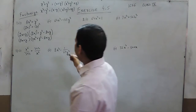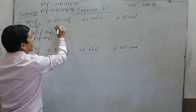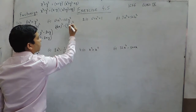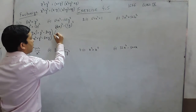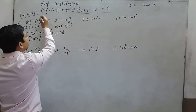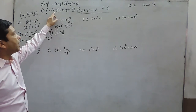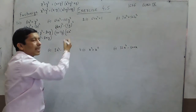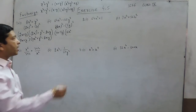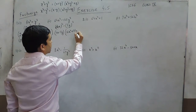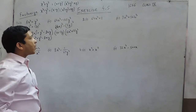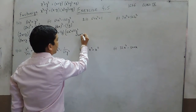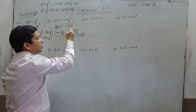Suppose there is a negative sign in between, then we apply the second identity. This can be written as (4x)³ minus (5y)³. When we solve this, it will be (4x − 5y) as the first factor, because there is a negative sign in between. The second factor is: first term squared is 16x², second term squared is 25y², and the product term is +20xy. So this will be the factorization.